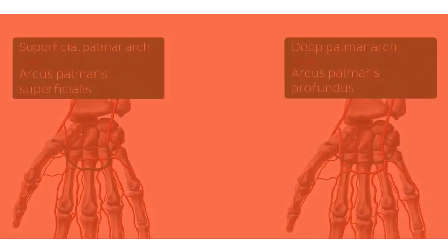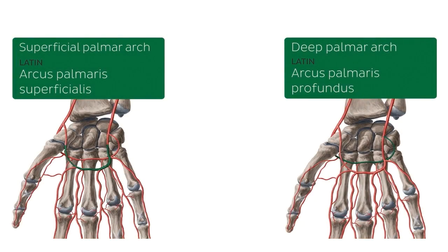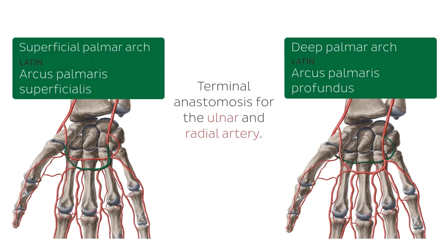We are going to start off with the first one on the list — these two arches that you see here highlighted in green. On the left side we have the superficial palmar arch, and on the right side you see highlighted in green the deep palmar arch. The arterial arches of the hand are networks of arteries that work as terminal anastomosis for the ulnar and radial arteries. They are found on the palmar side of your hand and give off branches for blood supply of the palmar side of your fingers.